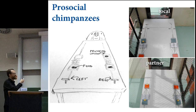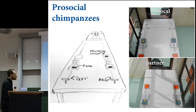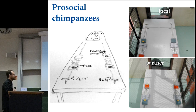Let me tell you about another dataset example. These data come from a comparative psychology experiment on the pro-social tendencies of chimpanzees. The experiment had multiple groups or so-called colonies of chimpanzees, and I'm only giving you the data from one of those.